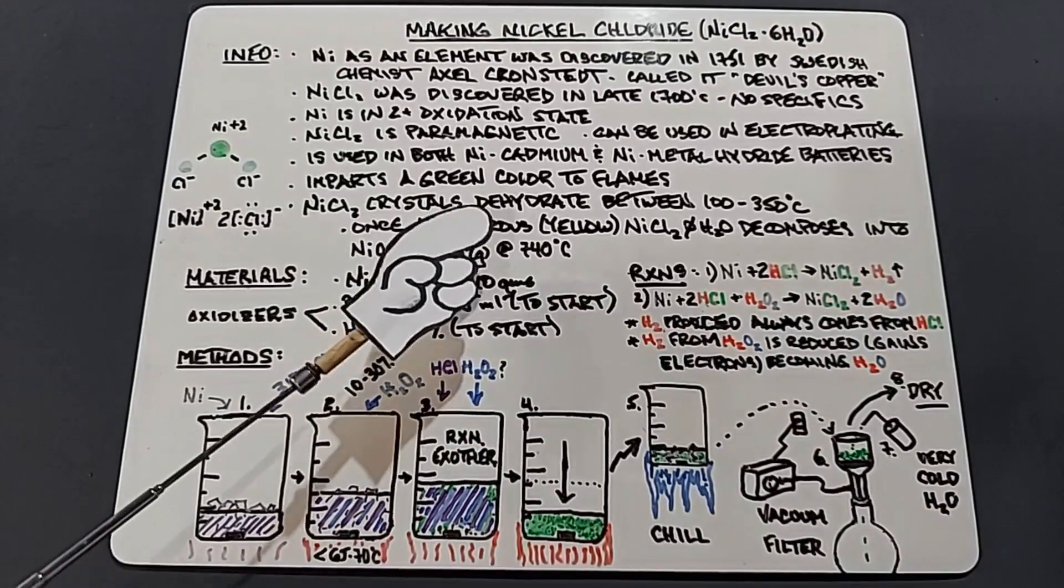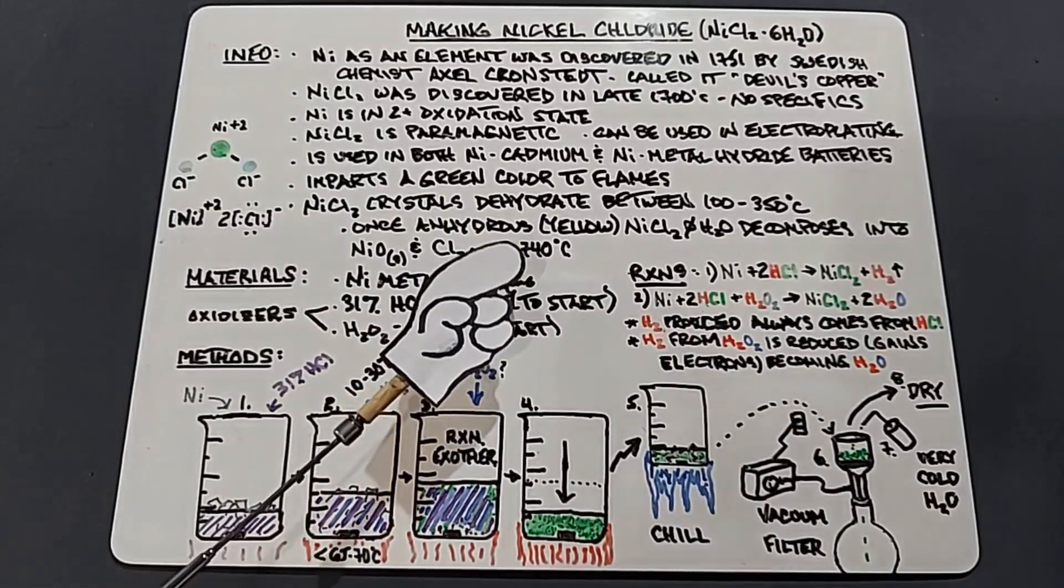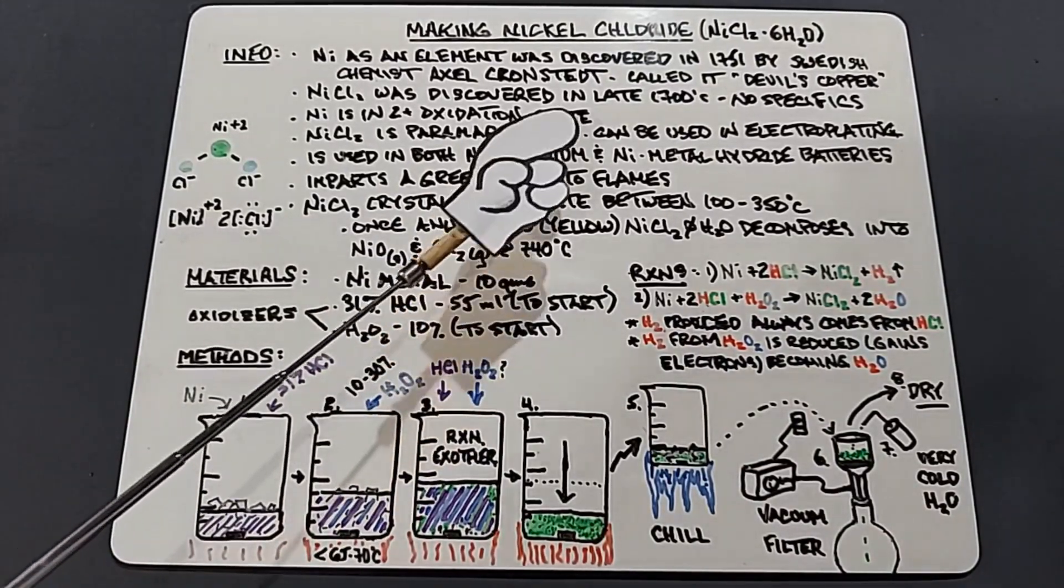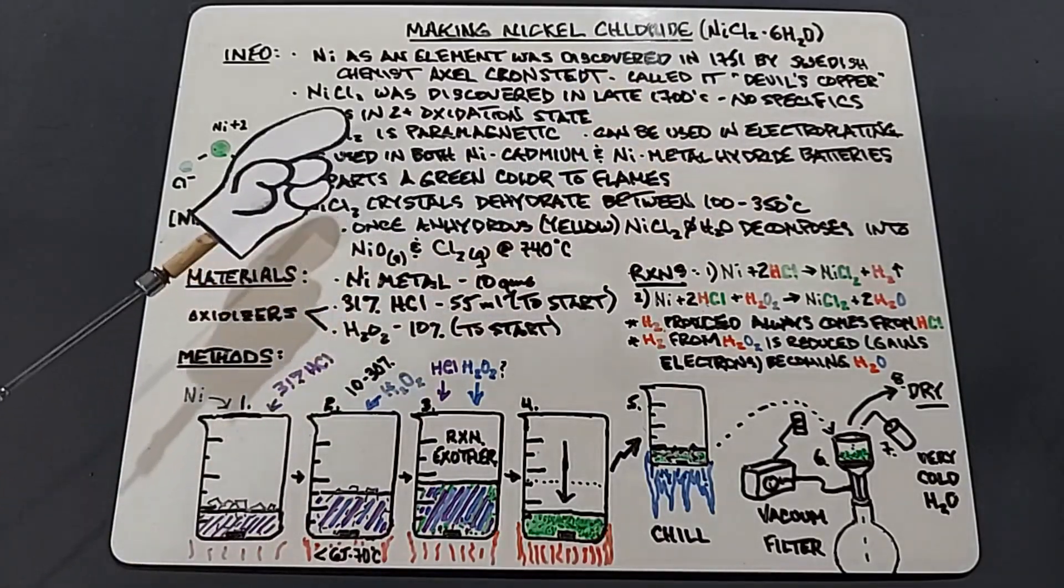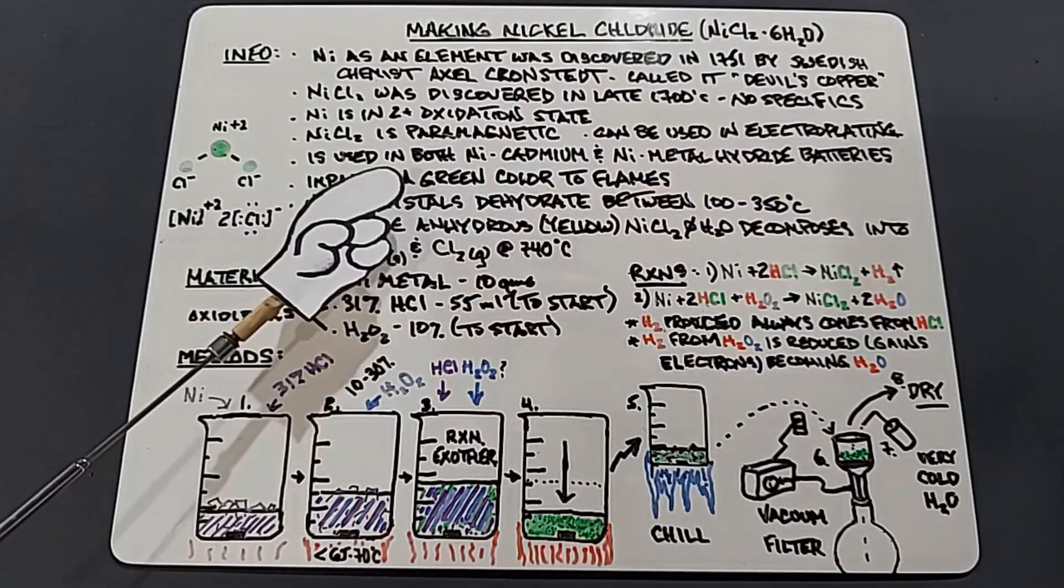And one last thing: nickel chloride is extremely hygroscopic. It already has six waters bonded to it, but if it's left out with any humidity it rapidly decomposes into a solution of nickel chloride and water.